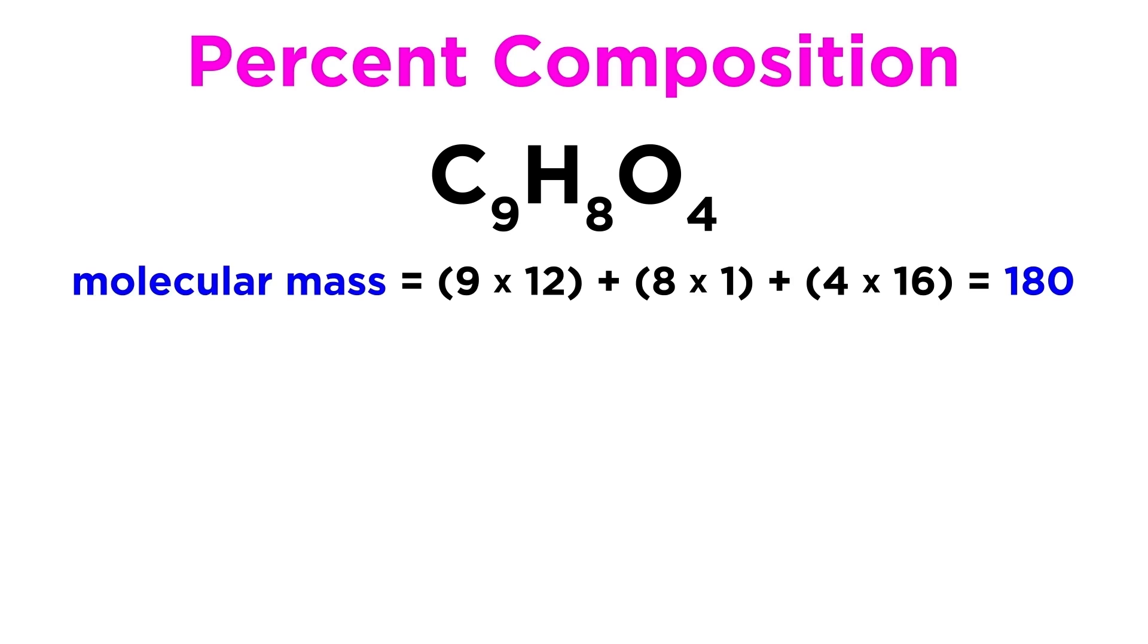If we add up all of the atomic masses and multiply them by their respective subscripts, we find that the molecular mass of aspirin will be 180 atomic mass units, so this is the total mass we will divide each number by.